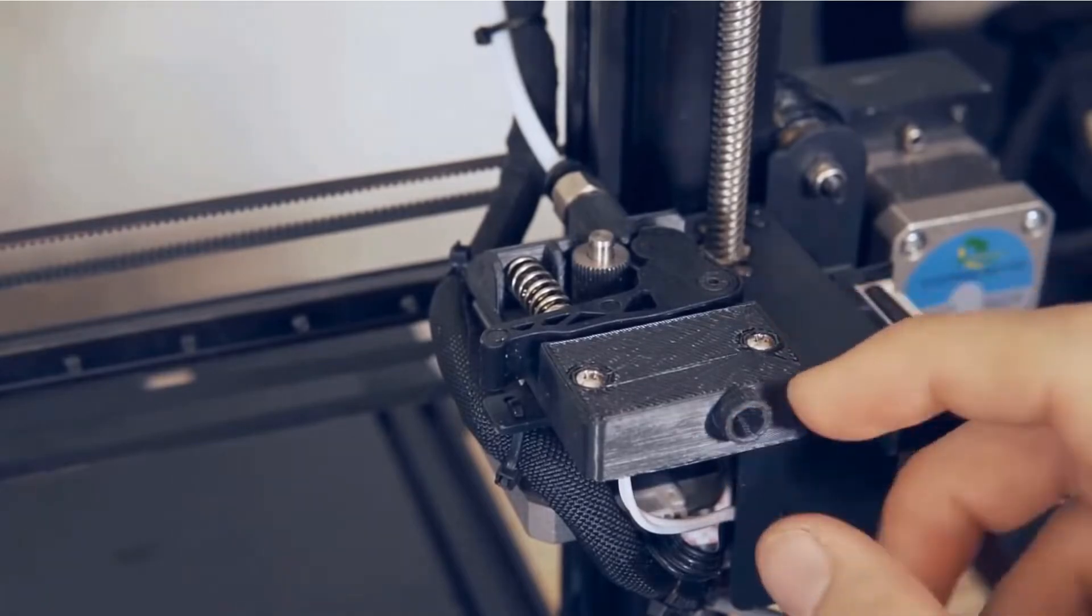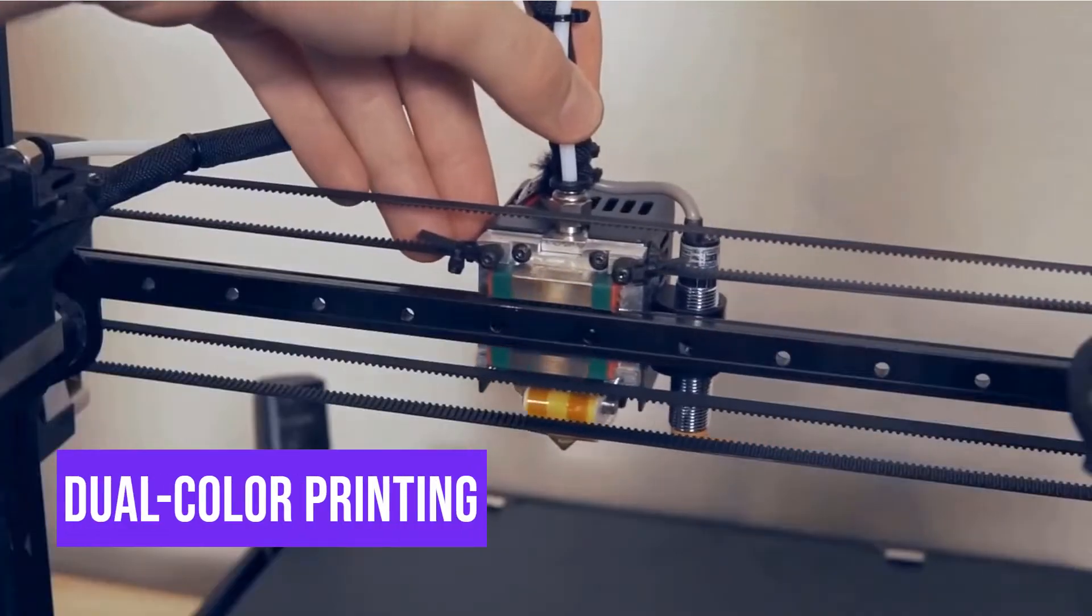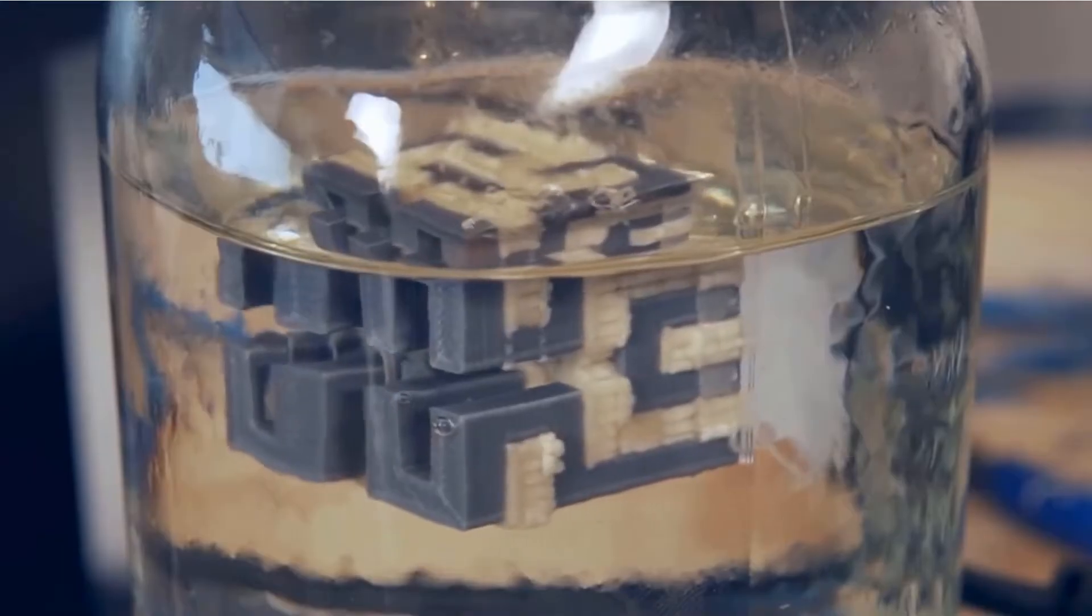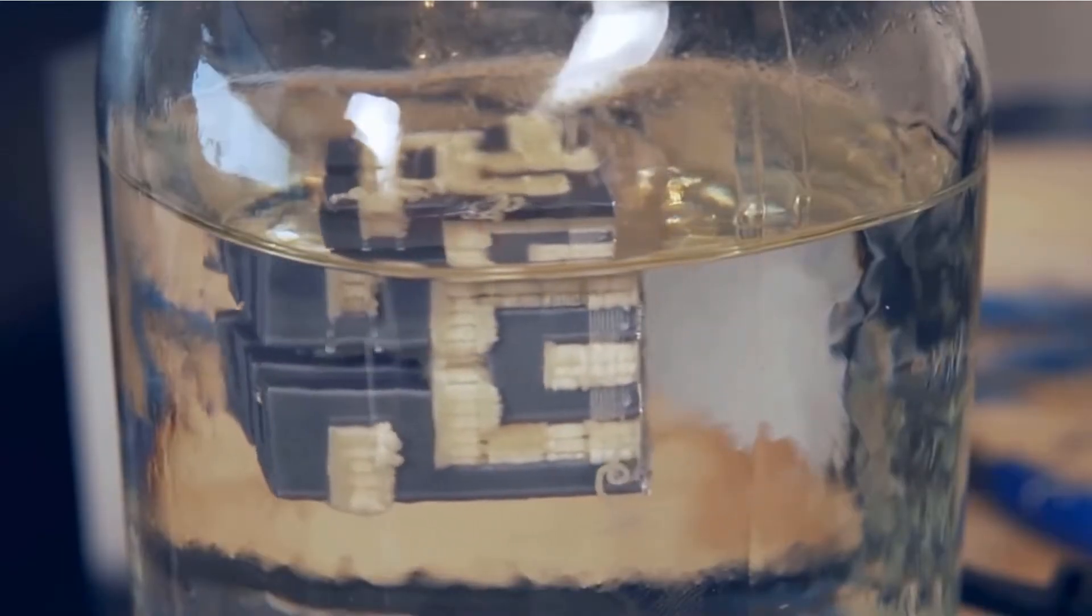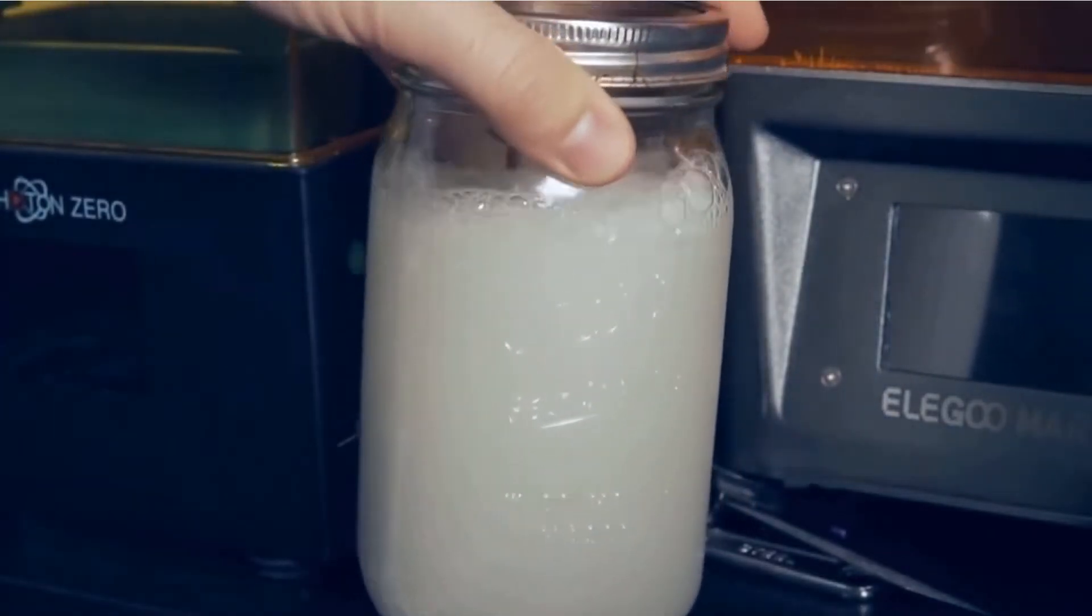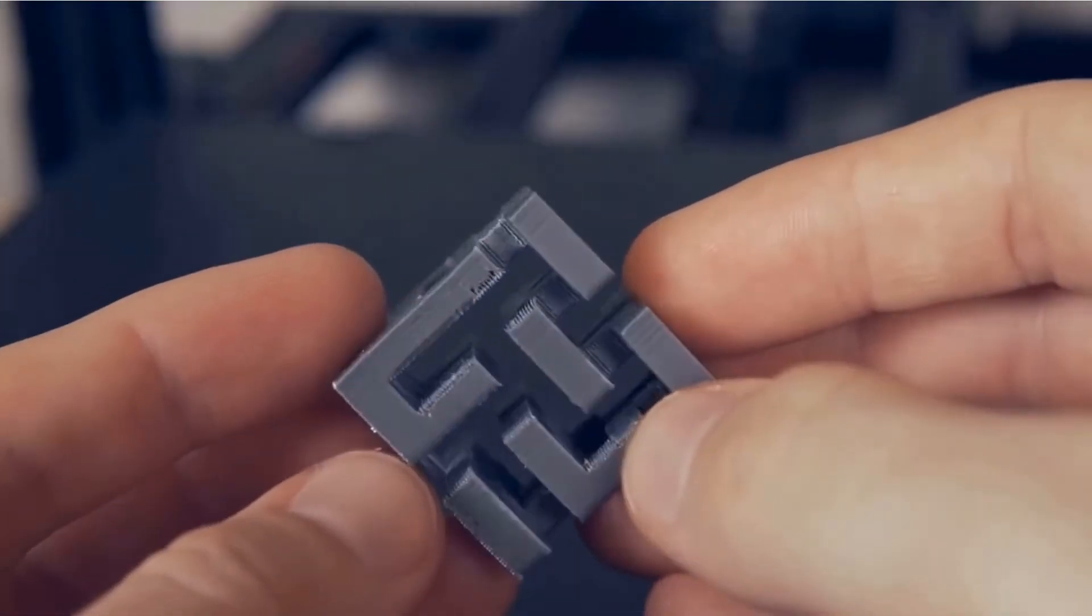Normal single nozzle printing, dual color printing with the same material (PLA plus PLA, ABS plus ABS), duplication mode printing (printing two copies of the same item at the same time), and mirror mode printing (printing a normal and a mirror copy of an item at the same time).